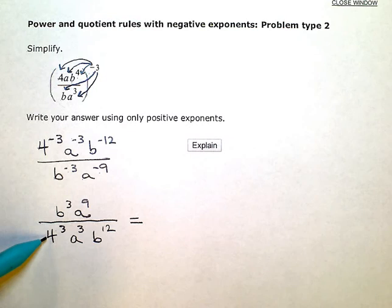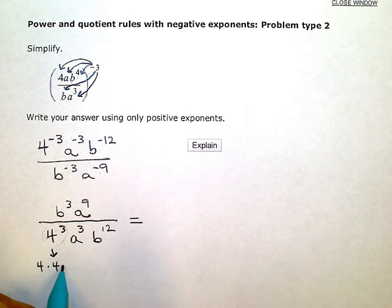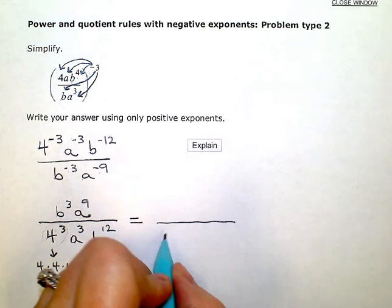So, I don't know what a and b are, so I can't multiply out the exponent on them, but this one I know is just four times four times four. Four times four is sixteen, times four, again, is sixty-four. So, I'm going to replace that four cubed with a sixty-four.